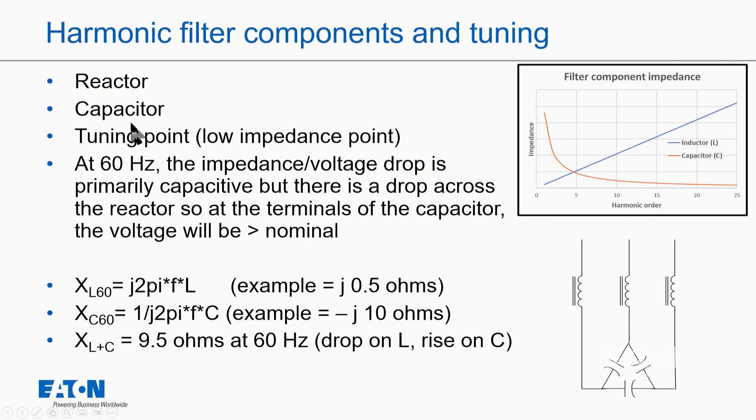So if I take and look at creating a harmonic filter, I have a reactor, a capacitor, and then I decide on a tuning point. That tuning point is the low impedance point. It's where I'm going to tune that filter to take out the harmonics of the power system, or at least reduce the harmonics in the power system.